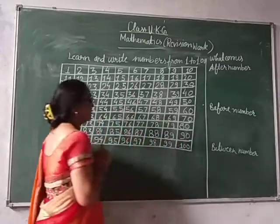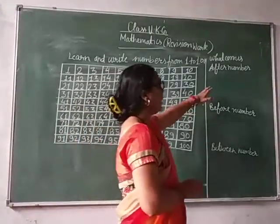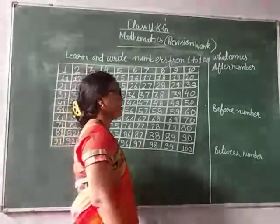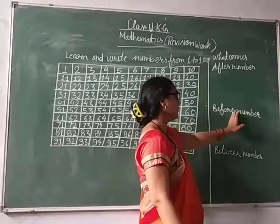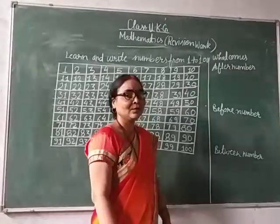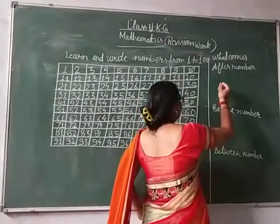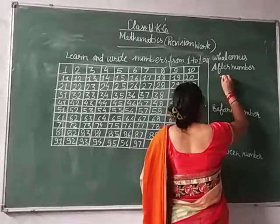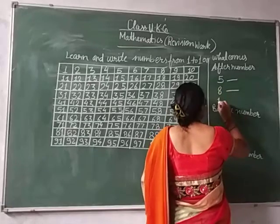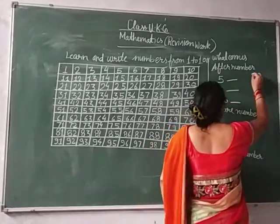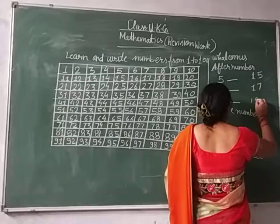Now I will teach three concepts: after-number, before-number, and between-number. After-number means the number that comes just after a given number. For example, the after-numbers of: 5, 8, 10, 15, 17, and 9.